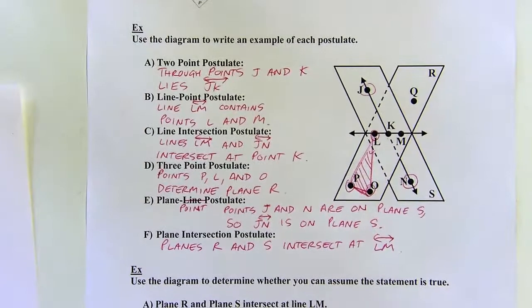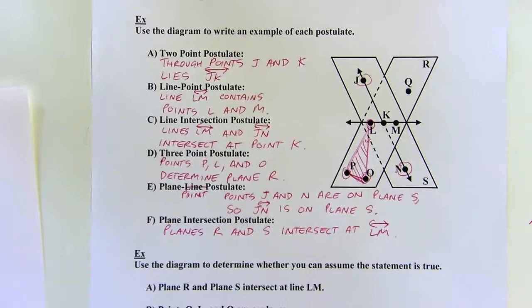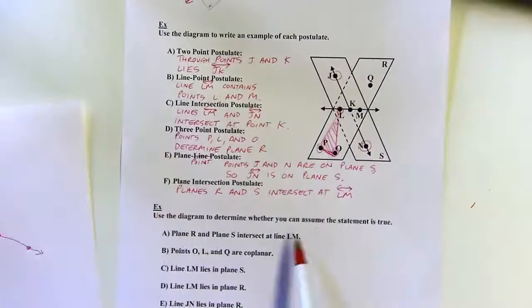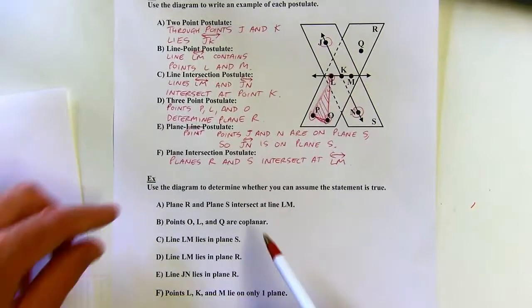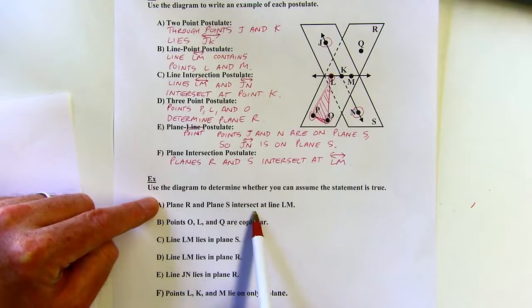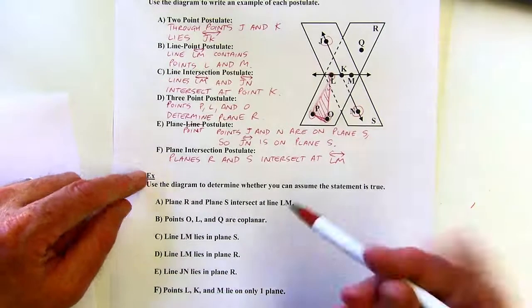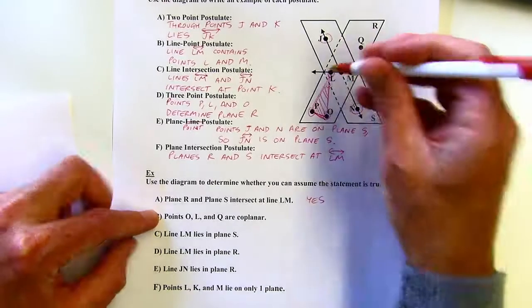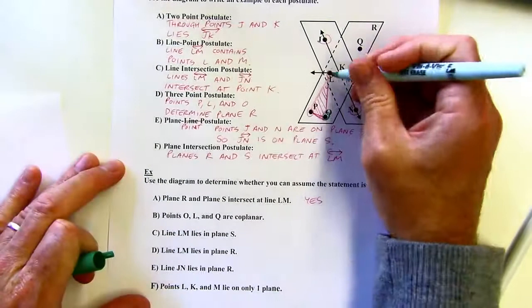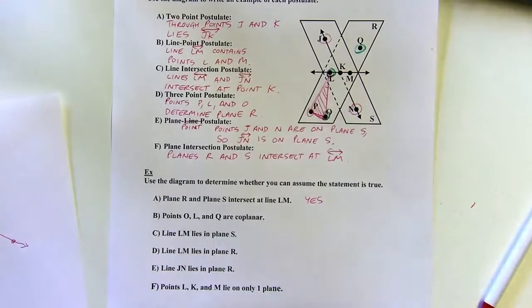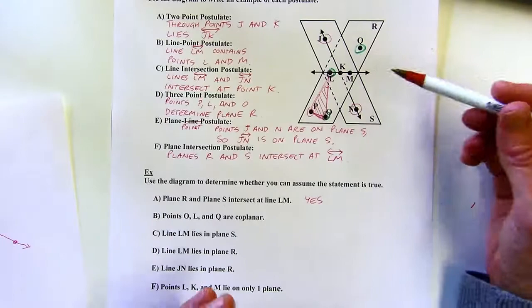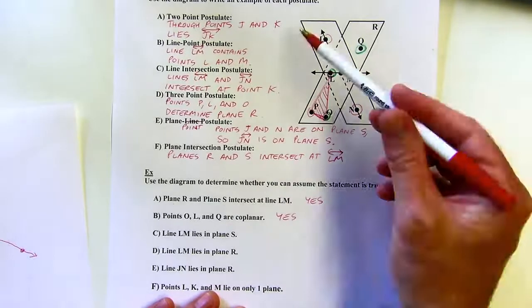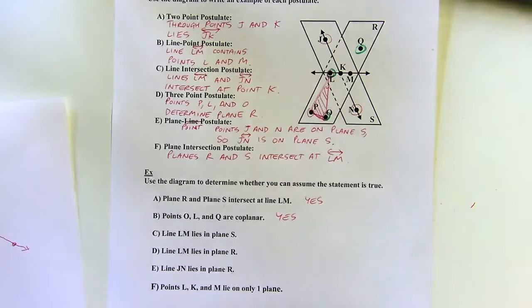For the next questions, using the same diagram, I'll determine whether each statement can be assumed true. Planes R and S intersect at LM — yes, that's what we just said. Points O, L, and Q: they're all on plane R, and technically any three points are always coplanar since you can always draw at least one plane through them. So yes. Line LM lies on plane S — yes, it's on both planes.